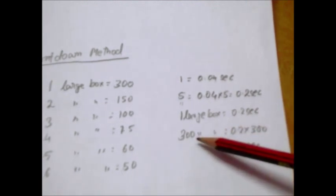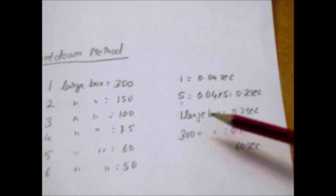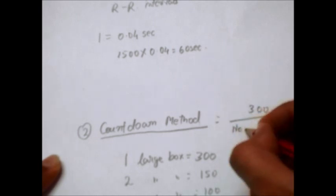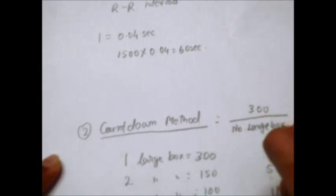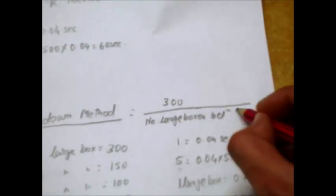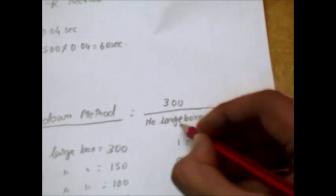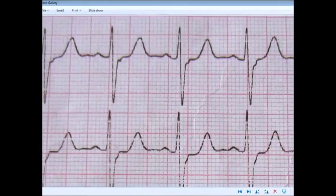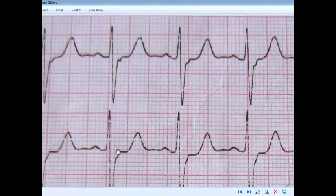Now if you divide number of large boxes by 300, that is 300 divided by number of large boxes between two consecutive RR intervals. I hope you understood that.